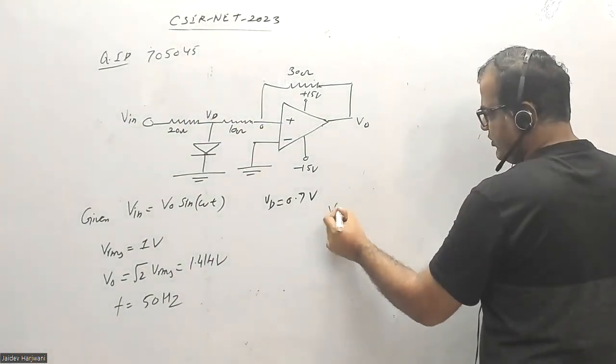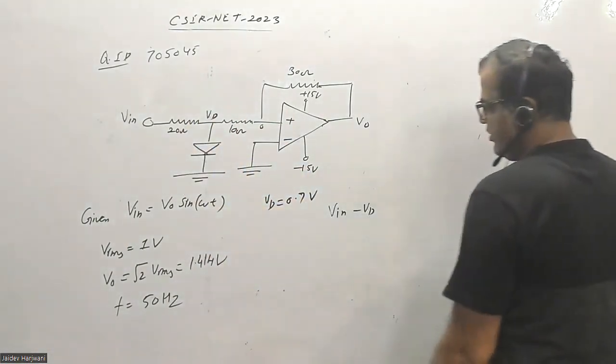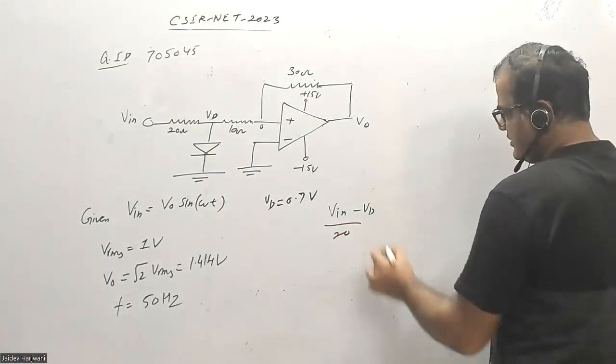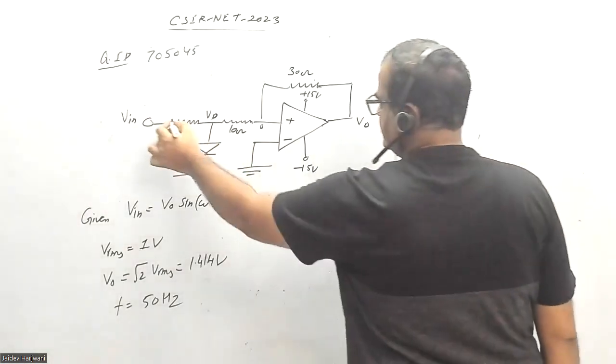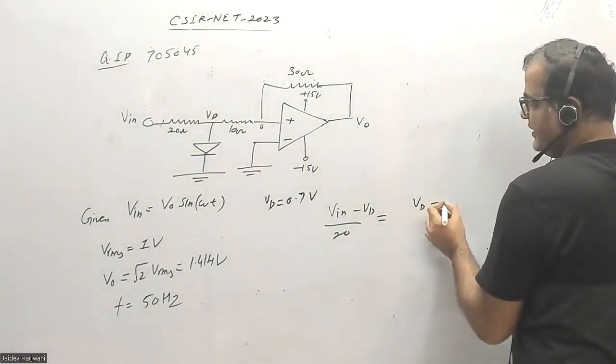Now, V input minus VD upon 20k, and this current should be equal to VD minus 0 upon 10k. I'm calculating the open circuit voltage, what is the voltage across this at this point, whether this diode is forward biased or reverse biased.